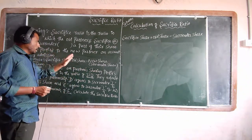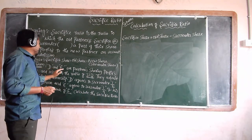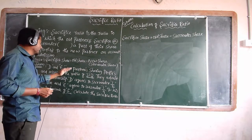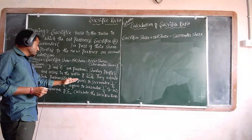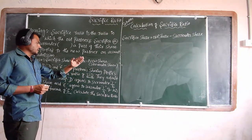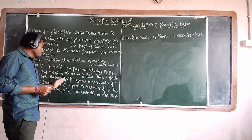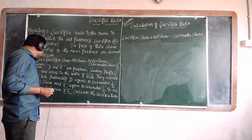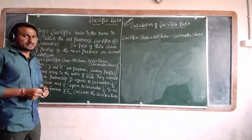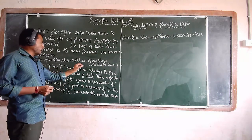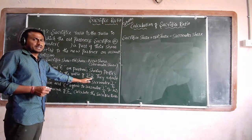The problem is that D and E are partners sharing profit and losses in the ratio of 3 is to 2. They admit F into the partnership. D agrees to surrender 1 by 2 of his share, and E agrees to surrender 1 by 4th of his share in favour of F. Calculate the sacrifice ratio.